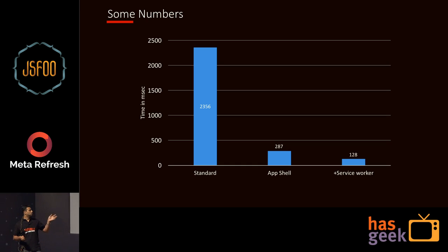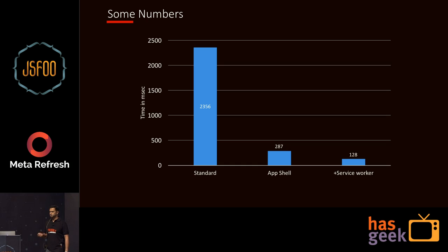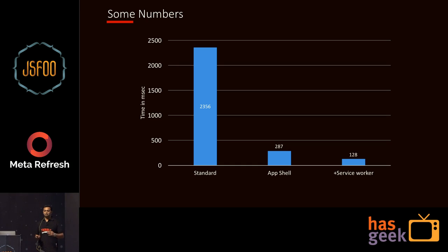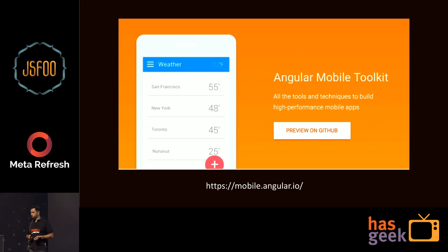Some numbers from the Angular mobile team: the initial first load was about 2,300 milliseconds. When they did the app shell, it came down to about 287 milliseconds. And when moving to a service worker, it dropped to about 128 milliseconds. So by using all of these things together, you can get sub-second loads — which is like the holy grail for our applications. You can learn more at mobile.angular.io.